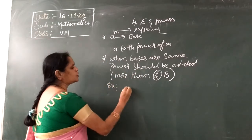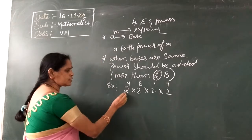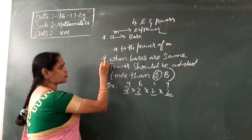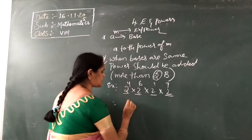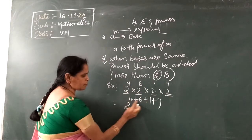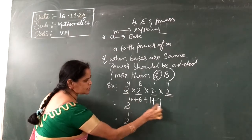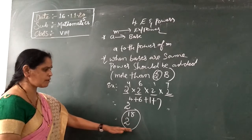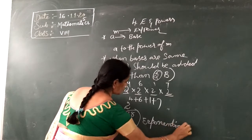For example: two to the power of four, into two to the power of six, into two to the power of one, into two to the power of seven. Here we have more than two bases, all the same. So powers are added: four plus six plus one plus seven. Four plus six is ten, ten plus one is eleven, eleven plus seven is eighteen. So the answer is two to the power of eighteen, which is in exponential form.